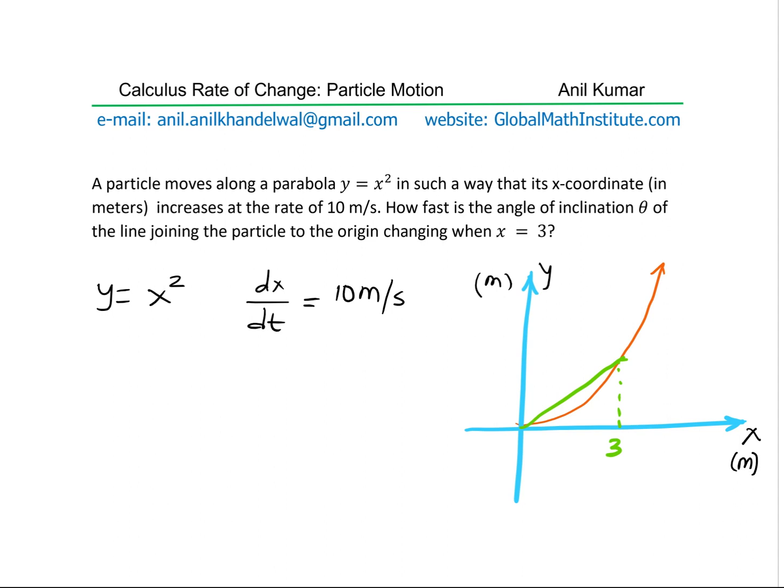So if x is 3, y value will be 3 square, which is 9. So this point will be 3 for x. X square y value will be 9. So that becomes the coordinate point.